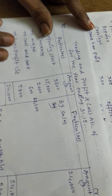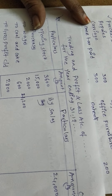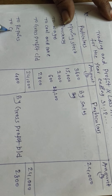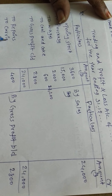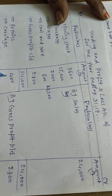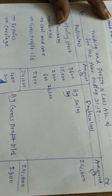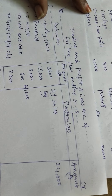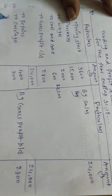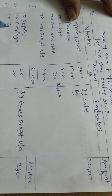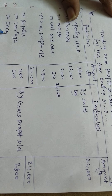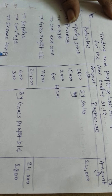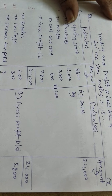Carriage is transport charges — an indirect expense: 'To carriage' — 300. Income tax paid is also an indirect expense: 'To income tax paid' — 300.